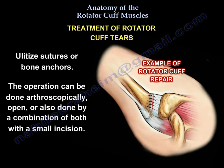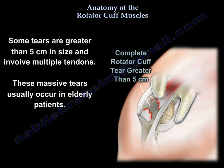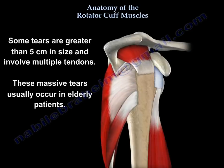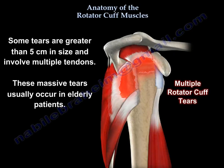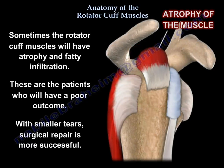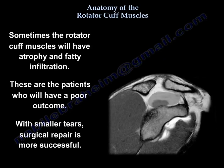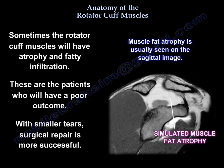Some tears are greater than five centimeters in size and involve multiple tendons. These massive tears usually occur in the elderly, and sometimes the muscles will have atrophy and fatty infiltration. These patients will have poor outcomes, whereas smaller tears have more successful surgical repairs.